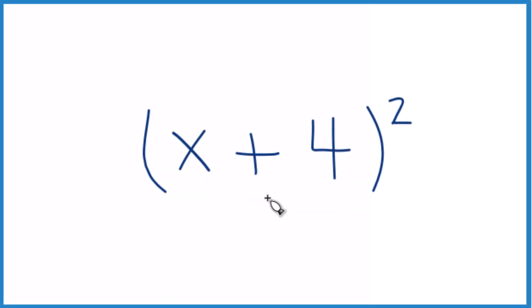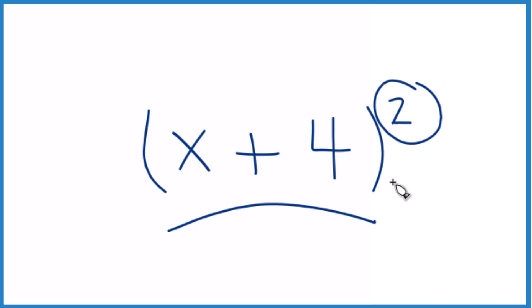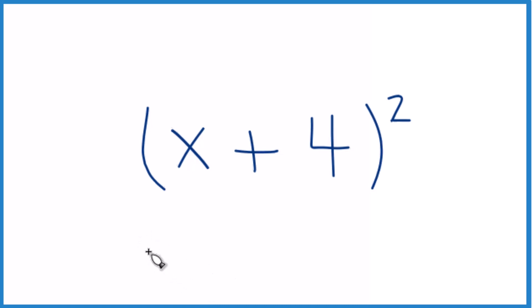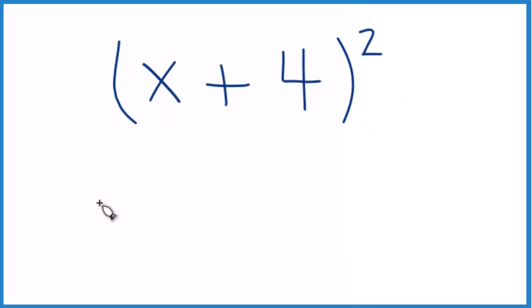Let's expand and simplify x plus 4 squared. So x plus 4 squared is just x plus 4 times x plus 4, like this.